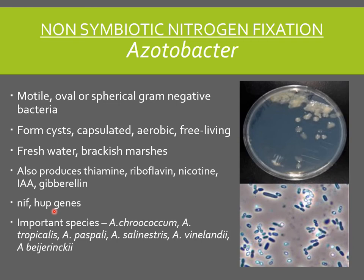Some of the important species of Azotobacter are Azotobacter chroococcum, Azotobacter paspali, Azotobacter vinelandii, Azotobacter beijerinckii, Azotobacter tropicalis, and Azotobacter salinestris. These are some of the important species used in the production of biofertilizers. When studying any nitrogen fixing organism, you need to focus on its characteristics, how it improves plant growth, what genes it possesses, and some of its important species.